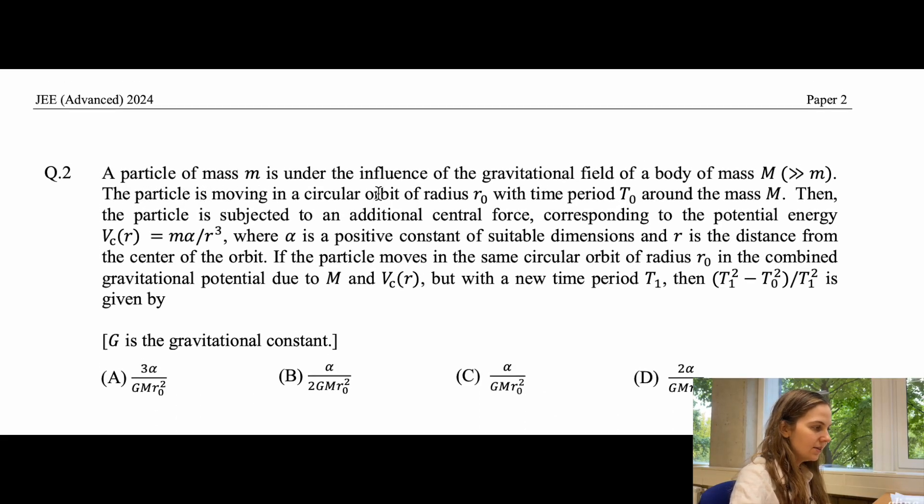A particle of mass m is under the influence of the gravitational field of a body of mass capital M, much much greater than small m. The particle is moving in a circular orbit of radius r0 with time period t0 around the mass M. Then the particle is subjected to an additional central force, corresponding to the potential energy Vc equal to m alpha over r to the power of 3, where alpha is a positive constant of suitable dimension and r is the distance from the center of the orbit.